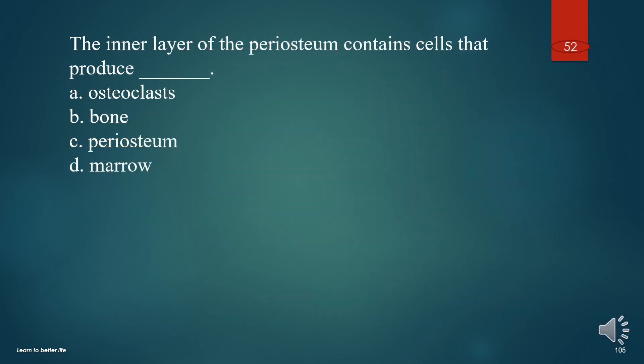The inner layer of the periosteum contains cells that produce what? A. Osteoclasts. B. Bone. C. Periosteum. D. Marrow. The answer is B. Bone.